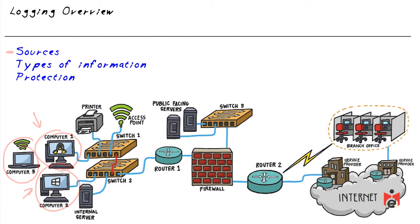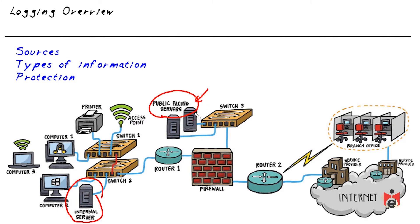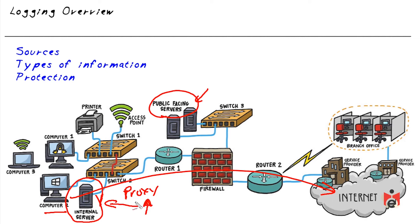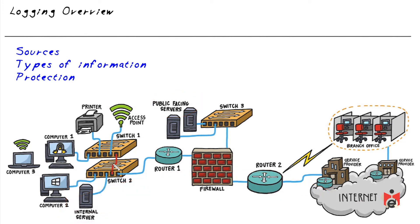We also need to make sure logging is enabled on those systems so we can periodically review it. Another source is our servers — internal-only or DMZ servers. For example, if this server is a proxy server and Computer 2 is trying to connect to the internet, we can look at the proxy server logs to see where Computer 2 is going, what ports were used, and when.